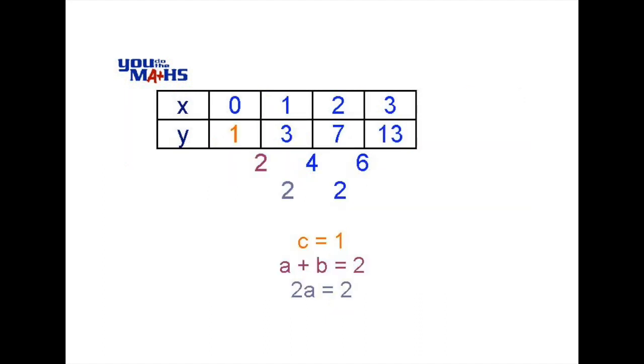Algebraically that gives us c equals 1, a plus b equals 2 and 2a is equal to 2. We can solve this algebraically if 2a equals 2 that means that a equals 1 and we can sub that back into the equation above that and say that if a plus b equals 2 b must also be 1 to give us 1 plus 1 is 2.